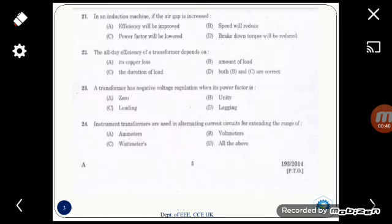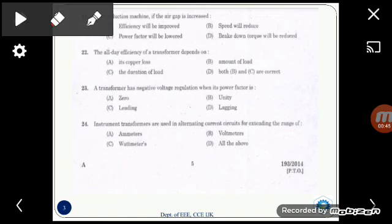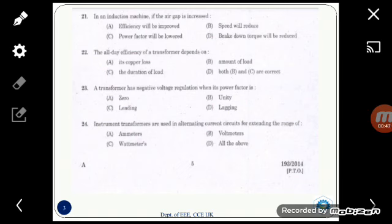So the 21st question is: in an induction machine if the air gap is increased, what will happen? As we know, if the air gap is increased, the magnetizing current required to develop the rated flux also increases. So as the magnetizing current increases, the phase angle between the voltage and magnetizing current increases. As the phase angle increases, we know that the power factor will decrease. So here the answer is the power factor will be lowered, that is option C.